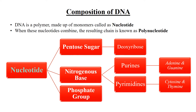The nitrogenous bases are always attached at the 1-prime carbon of the sugar. The phosphate groups are always found in between the 5-prime carbon of one sugar molecule and the 3-prime carbon of the neighboring sugar molecule.